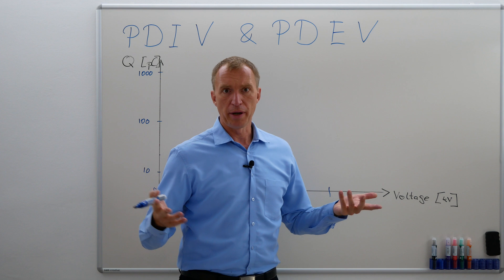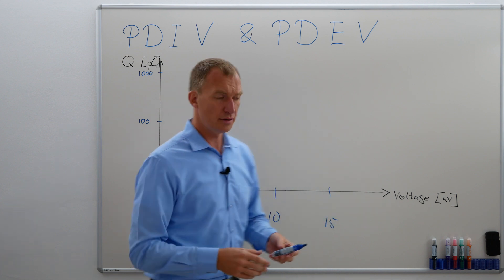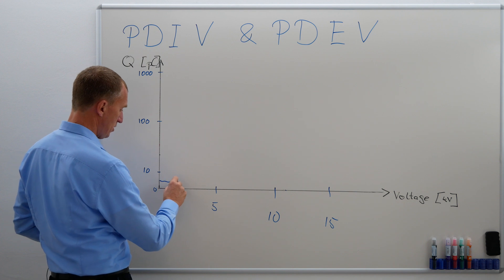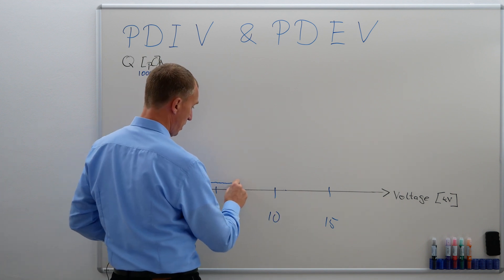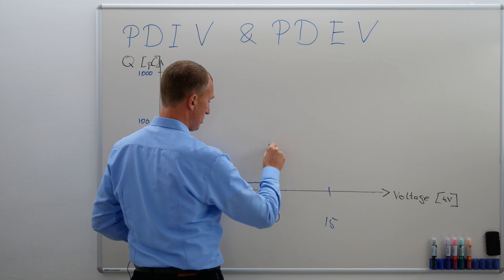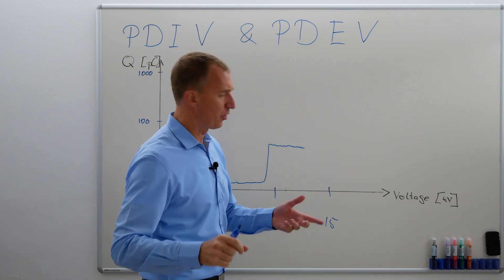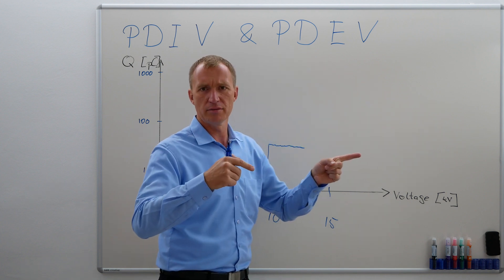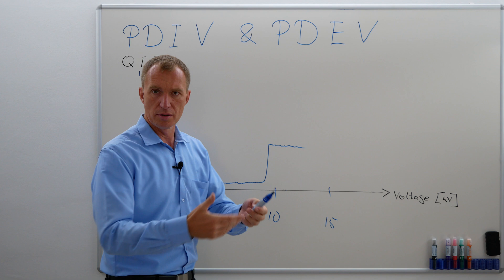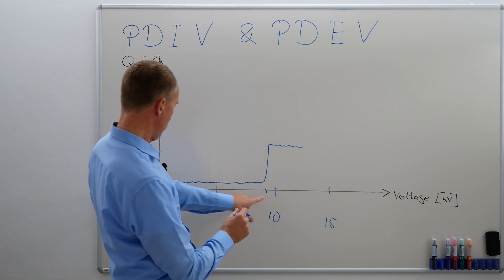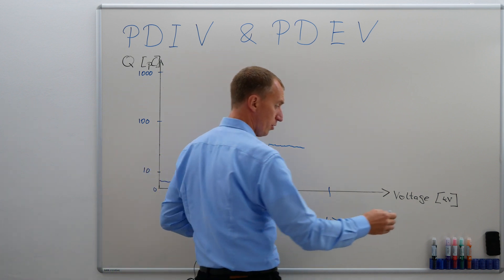Let's say I have a background noise of about 5 pC in a fairly good laboratory, and I'm going to test a corona. I start increasing the voltage — nothing really happens. Then at around 9 kV, my corona starts. I can see it on my screen. I don't need to increase it further because there's another effect that can happen. So my Partial Discharge Inception Voltage is around 9 kV.